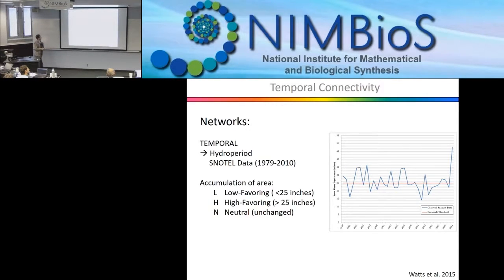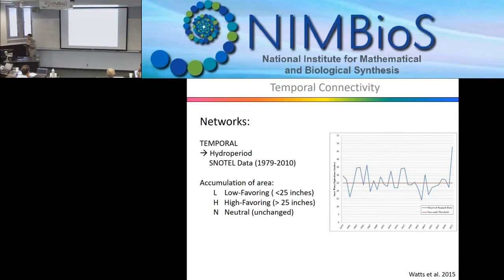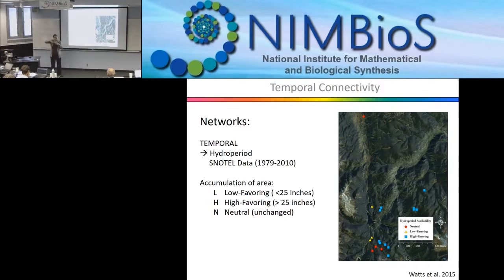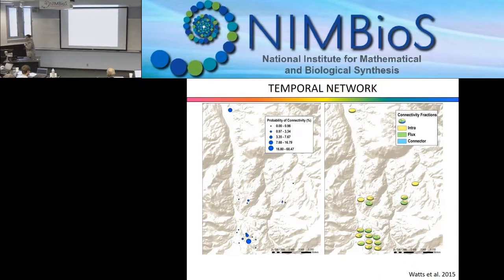We used snow melt data from a long time series and made a threshold: anything below 25 inches of snow would not maintain ponds through the year. Some ponds would be unchanged, some would have favorable occurrence with lots of snow, and some would disappear in low-snow years. We reclassified our ponds for each year and created a temporal network.